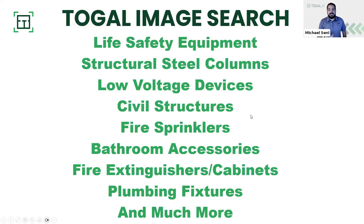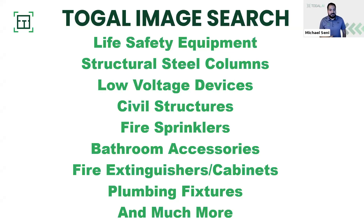Here are some additional ways we can also utilize the image search: life safety equipment, structural steel columns, low voltage devices, civil structures, fire sprinklers, bathroom accessories, fire extinguisher cabinets, a lot of Division 10 items, plumbing fixtures, and much more. You can utilize it on any symbol you would like on a plan — just click and draw that bounding box, and then let the AI do the count for you.